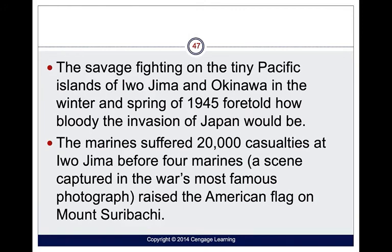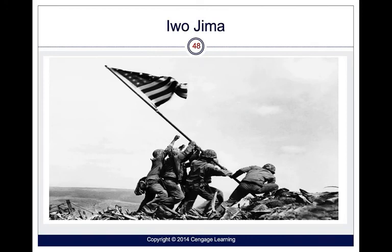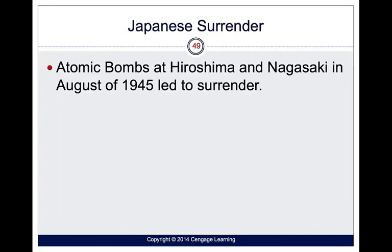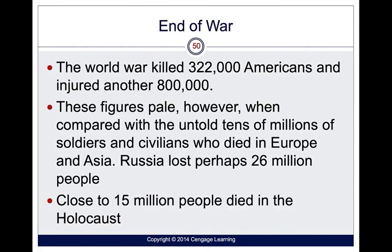The savage fighting on the tiny Pacific island of Iwo Jima and Okinawa in the winter and spring of 1945 showed how bloody the invasion would be. The Marines suffered 20,000 casualties at Iwo Jima. My grandfather was actually a corpsman in the Navy attached to a Marine outfit and fought in the Battle of Iwo Jima — seeing this picture always reminds me of him. He never talked about it. Atomic bombs were eventually dropped on Hiroshima and Nagasaki in August 1945, which led to the end of the war.